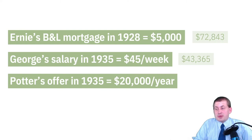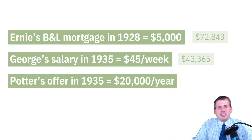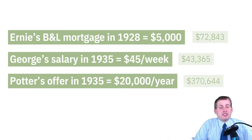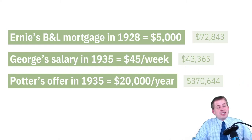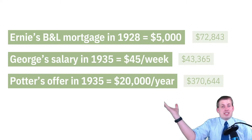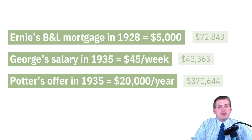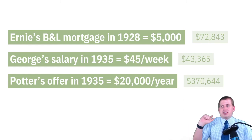The evil banker then offers George $20,000 a year to come work for him. In today's terms that sounds terrible — $20,000 is poverty level. But converting that to today's money, he was actually offering almost $400,000 a year. So George was going from the equivalent of $43,000 to $370,000 — almost ten times his salary. Spoiler: he doesn't take the job because he doesn't want to work for an evil banker.